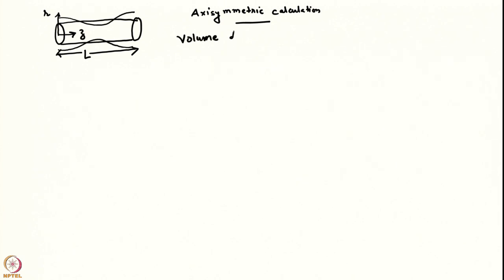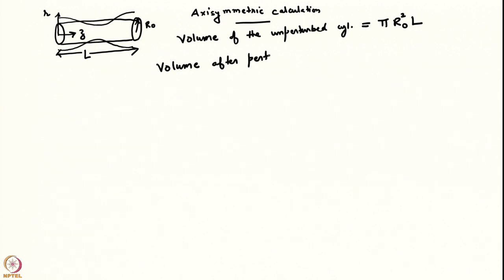The volume of the unperturbed cylinder — with radius R₀ and length L — is πR₀²L. We will put a perturbation on the free surface written as A₀ cos(kz), where k = 2π/L, meaning we are imposing a perturbation whose wavelength equals the length of the cylinder.